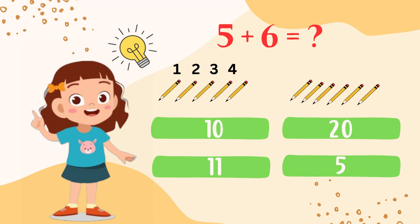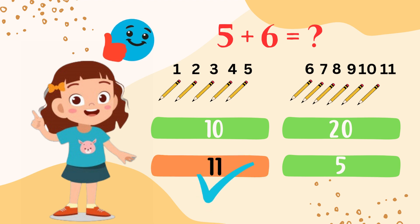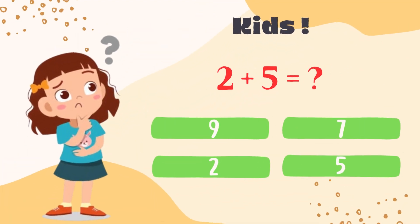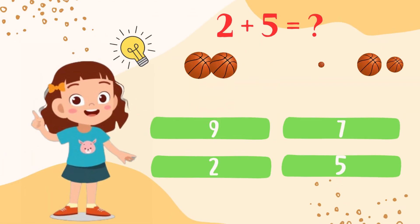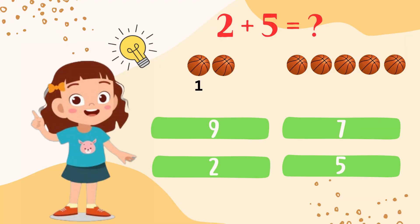5, 6, 7, 8, 9, 10, 11. So my dear kids, 5 plus 6 is 11. Kids, do you know what is 2 plus 5? You have 2 balls and 5 balls. Let's count together: 1, 2, 3, 4, 5